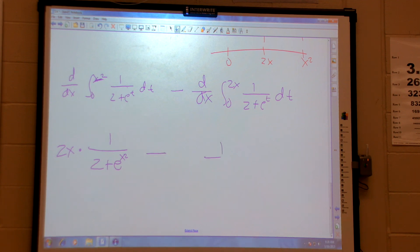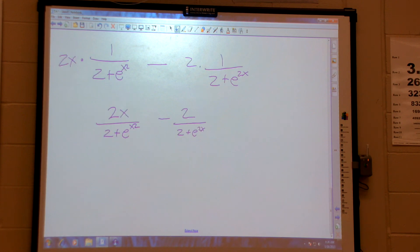Minus, same thing here, plug it in. What's the derivative? 2. And all I'm going to do is clean that up. So I have 2x over 2 plus e to the x squared, minus 2 over 2 plus e to the 2x. Voila.